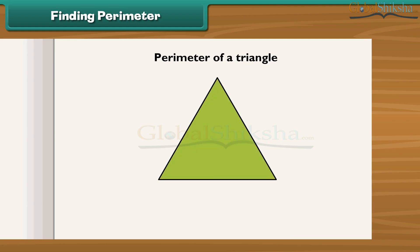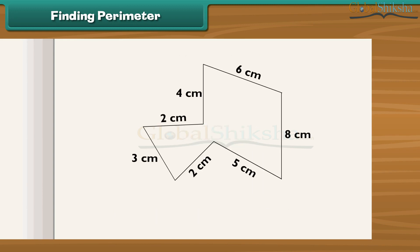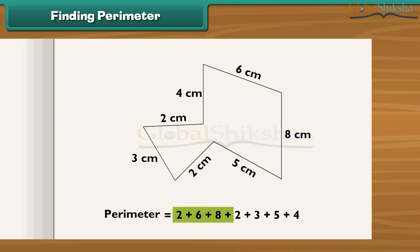Perimeter of a triangle: a triangle is a three-sided figure. If a, b, and c are the three sides, then its perimeter equals a plus b plus c. To calculate the perimeter of a given figure, we simply add the lengths of all its sides: 2 plus 6 plus 8 plus 2 plus 3 plus 5 plus 4, which equals 32 centimeters.